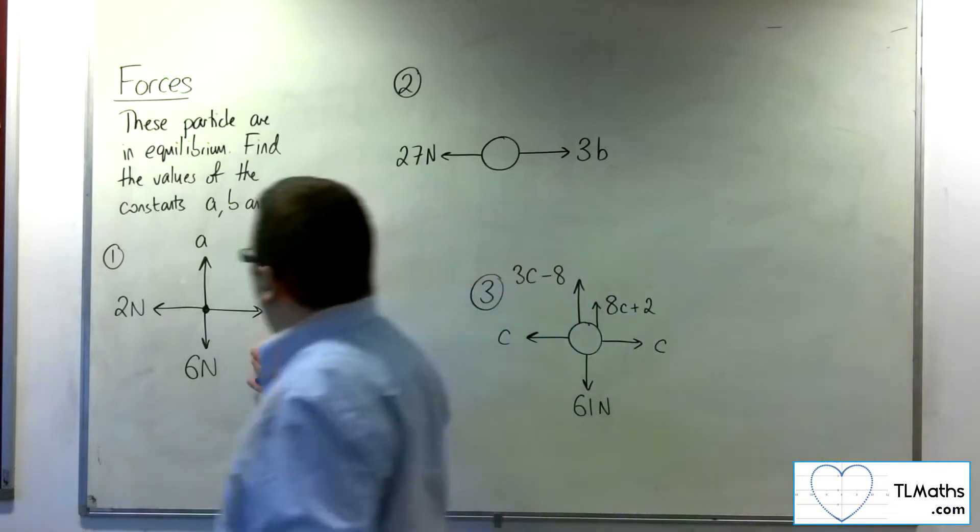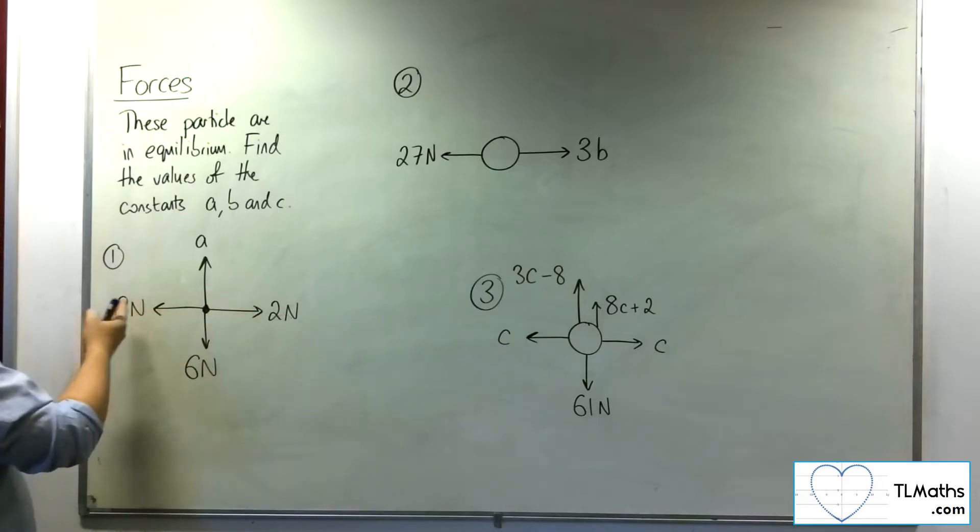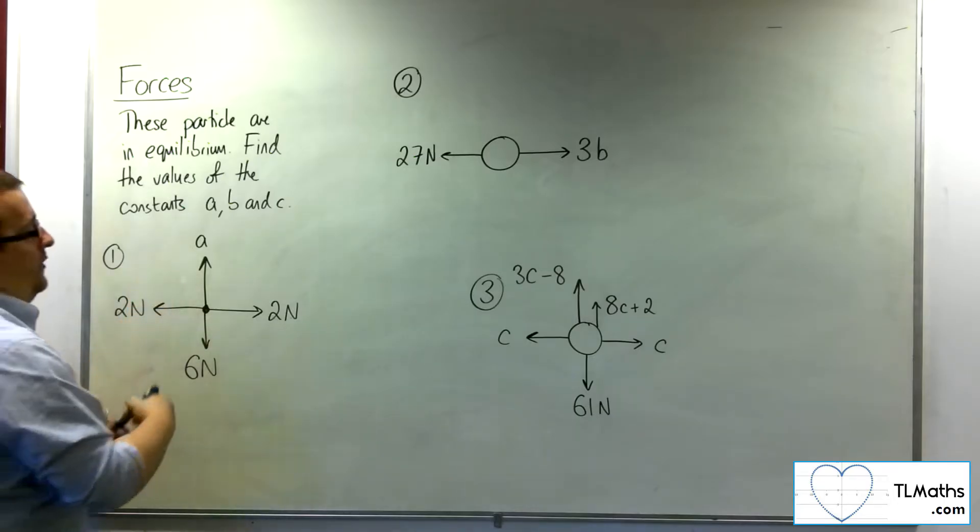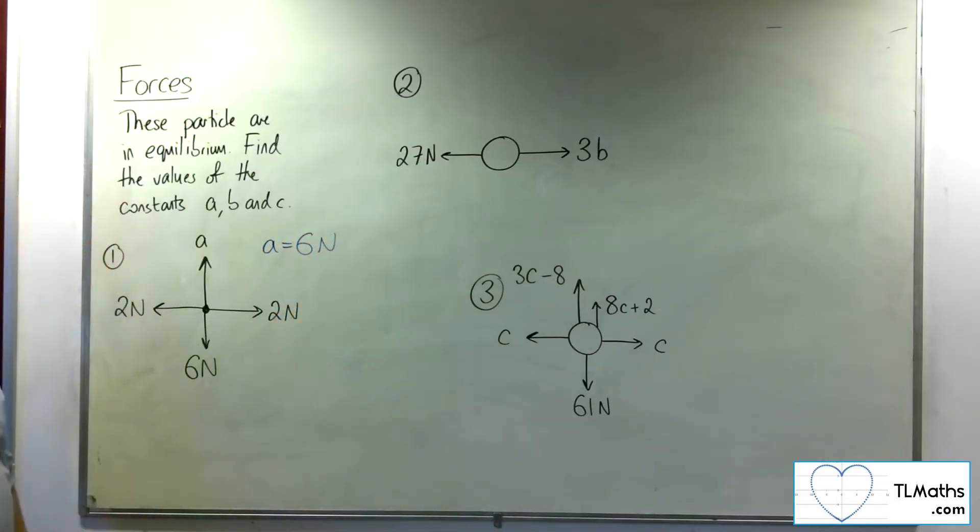So in this first problem, we can see that the two newtons working left and right will cancel one another out. And in order for this particle to be in equilibrium, then six newtons must act against six newtons, and so a would have to be six newtons. Okay, so that's your first one.